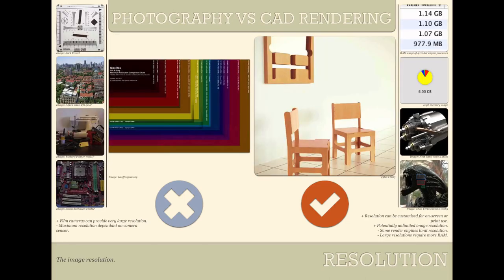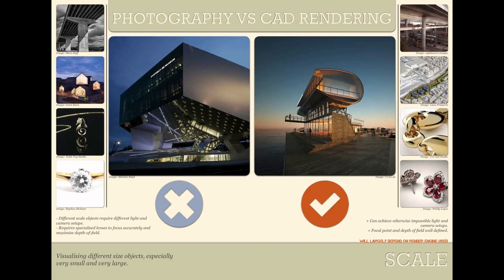The next category was resolution — the size of the image in pixels. In a camera, this is limited by the image sensor; you can select a lower resolution but not higher in a single image, and going higher requires stitching multiple images. In CAD rendering the resolution is potentially unlimited, though it requires a large amount of memory, so CAD rendering won. The next category was scale. With photography, shooting a building or a tiny piece of jewellery may require different lenses and lighting setups. With CAD rendering, you can render something the size of a building or a piece of jewellery using the same hardware, and with extreme values for settings you don't need tricks like focus stacking. CAD rendering wins.